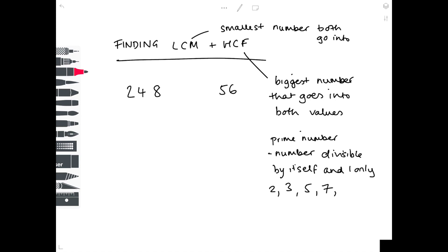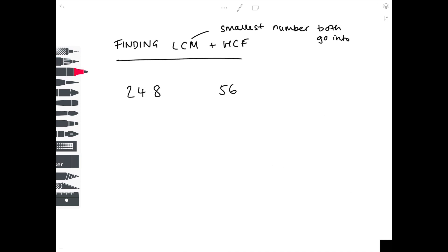Nine is not a prime number — it's divisible by three, nine, and one. Ten is not a prime number. Eleven is our next prime number. So now we've looked at the definition of a prime number, we can look at working out the products of prime factors. Let's start by looking at 56. The easiest way to do this is simply dividing by two.